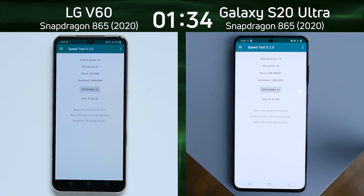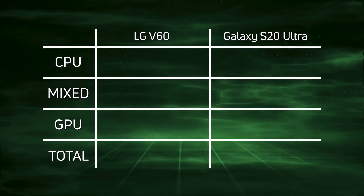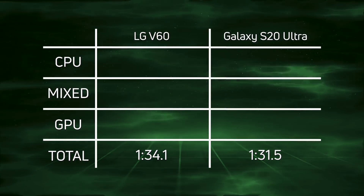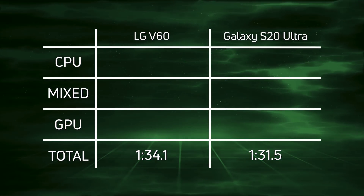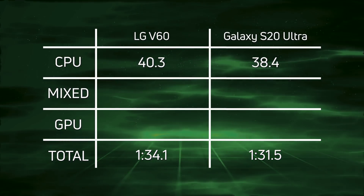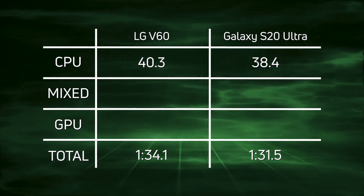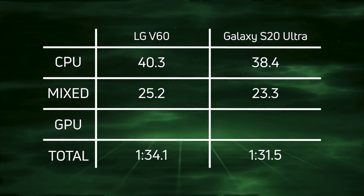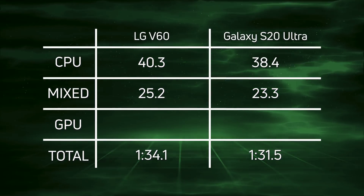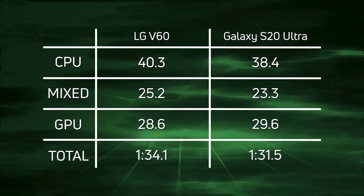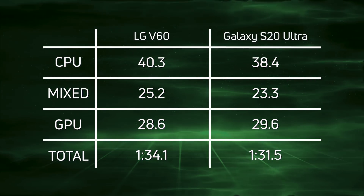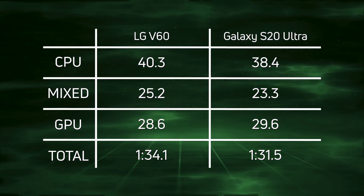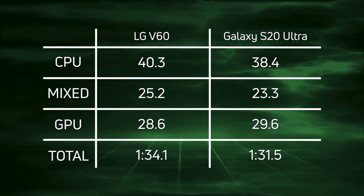Let's break down those scores and see exactly what happened. The Galaxy S20 Ultra beat the LG V60: 1 minute 31.5 versus 1 minute 34.1 — a difference of 2.6 seconds. When we get to the CPU time, we can see a win by the Galaxy S20 Ultra: 38.4 versus 40.3, a difference of 1.9 seconds. That difference of 1.9 seconds is carried through into the mixed CPU/GPU test: 25.2 versus 23.3. And then finally in the GPU test — those two flyovers — we see a one second difference of 28.6 versus 29.6. So when you add all of those up, the Galaxy S20 Ultra wins with 1 minute 31.5.